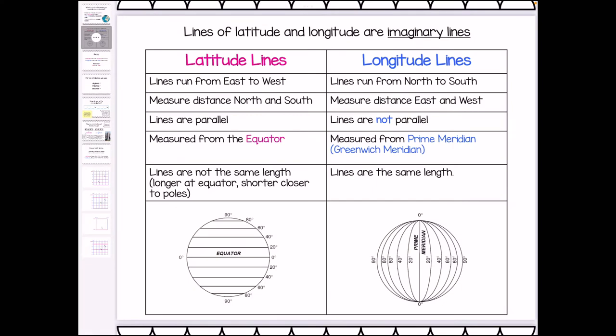Latitude and longitude lines are imaginary lines — we don't see random lines drawn across the earth. They are just used to help us find exact location because the earth is so big. For latitude lines, they run from east to west and they measure distance north and south of the equator. The equator is the main latitude line we measure from. They are parallel to each other and the lines are not the same length — at the equator the lines are longer, whereas at the poles they get shorter.